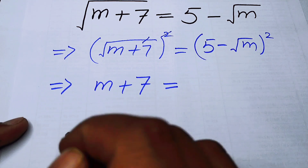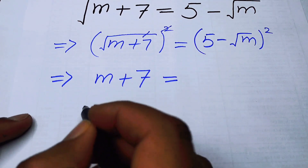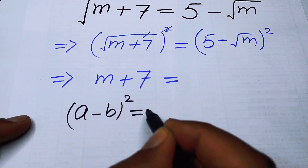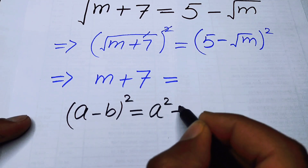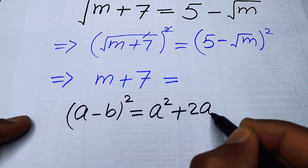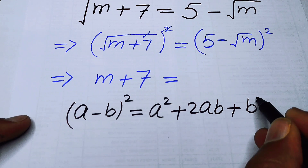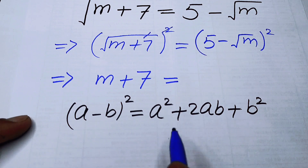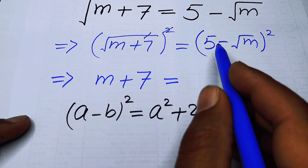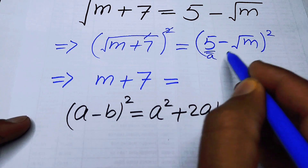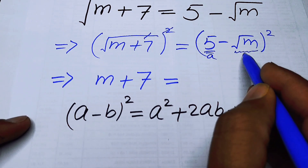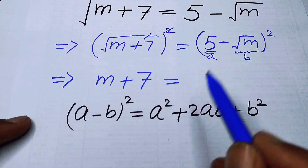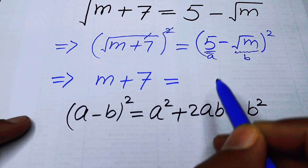Now I will apply the famous identity: (a - b)² = a² - 2ab + b². On the right hand side, we will apply this identity where a = 5 and b = √m. We substitute these values into the formula.